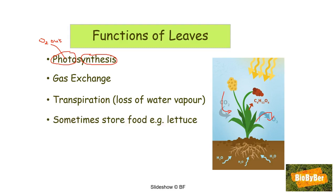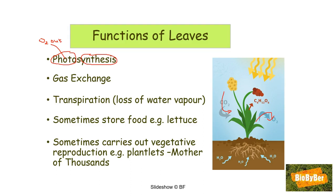Another function of leaves is that they sometimes store food — we find this in lettuce and cabbage leaves, which is why they are a source of food for us. Finally, leaves can carry out vegetative reproduction or asexual reproduction. An example is the plant called mother of thousands, which has numerous little plantlets along the edges of its leaves. When these plantlets fall off, they have the potential to grow into new plants.